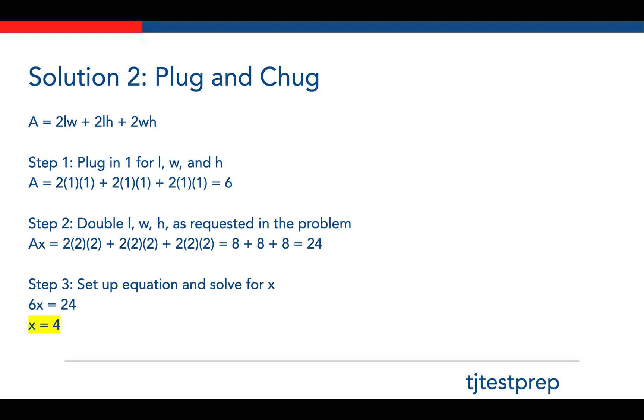The second step is to actually double L, W, and H as in the problem. Here, we plugged in 1 originally. Now, we know that L, W, and H is doubled. So now just plug in 2. You get 8 plus 8 plus 8, which is 24.